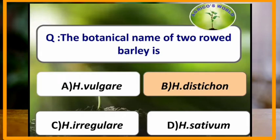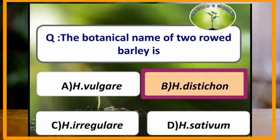The botanical name of two-row barley is Hordeum distichon. The botanical name of six-row barley is Hordeum vulgare, and the group of barley which contains both six-row and two-row barley is Hordeum irregulare.